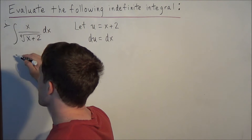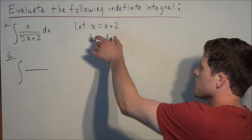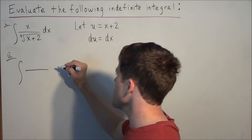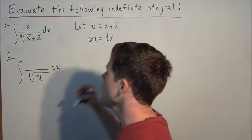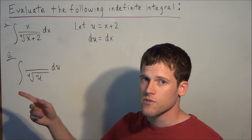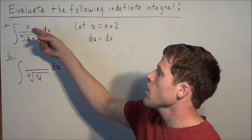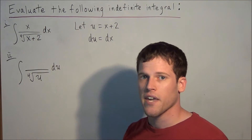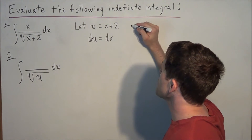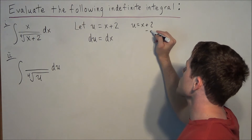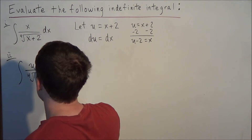There is one tricky step in this problem. Let's think about what we can substitute based on what we wrote down. dx equals du, and under the fourth root we can replace x plus 2 with u. Now we need to think about the x in the numerator — since x is not the derivative of x plus 2, we use the fact that u equals x plus 2, so subtracting 2 from both sides gives us u minus 2 equals x.